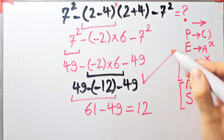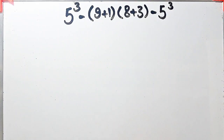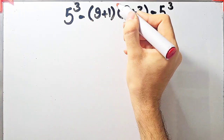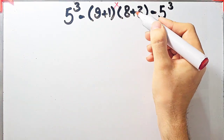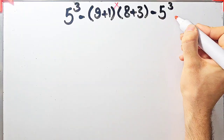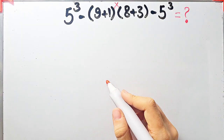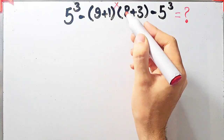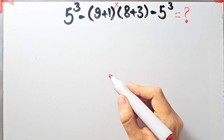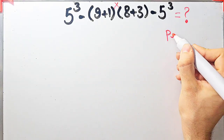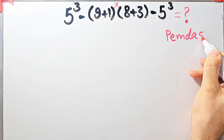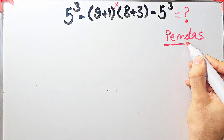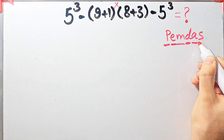Let's solve another question about the PEMDAS rule. 5 to the power of 3, minus open parentheses, 9 plus 1, close parentheses, then times open parentheses, 8 plus 3, close parentheses, then minus 5 to the power of 3. What is the answer? In this question, we have exponents, subtraction, parentheses, addition, and multiplication. To solve this, we follow the PEMDAS rule: parentheses, exponent, multiplication, division, addition, and subtraction.